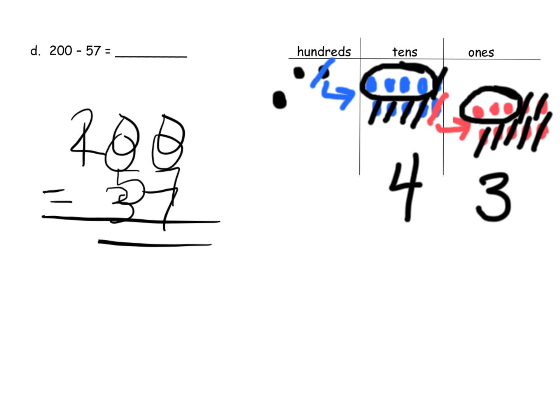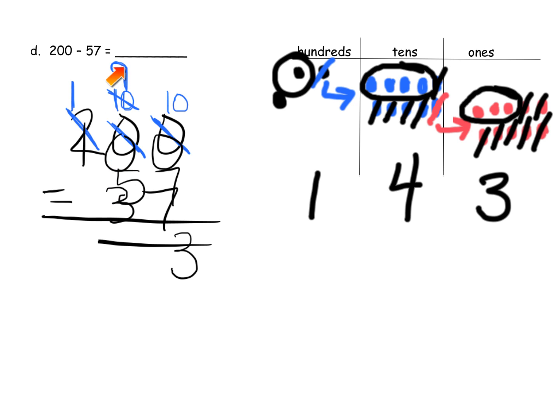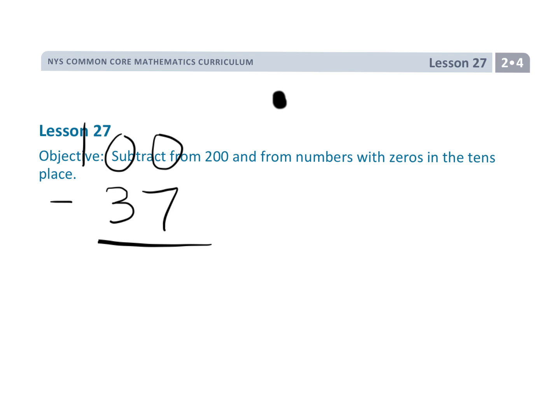Let's do that using the standard algorithm. We unbundle one of these hundreds, leaving 100, giving us 10 tens. Then unbundle one of those tens, leaving nine tens and 10 ones — two steps. 10 ones minus 7 ones gives three ones; nine tens minus five tens gives four tens; 100 minus no hundreds leaves 100. Our answer is 143 both ways. And that's Grade 2, Module 4, Lesson 27 — subtracting with a lot of unbundling, especially because there are zeros in our place values.